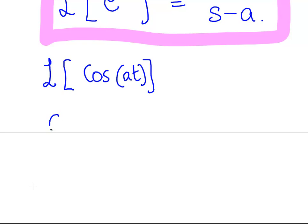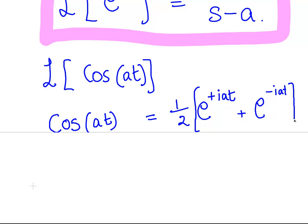cos(at) is equal to one-half of e^(iat) plus e^(-iat).